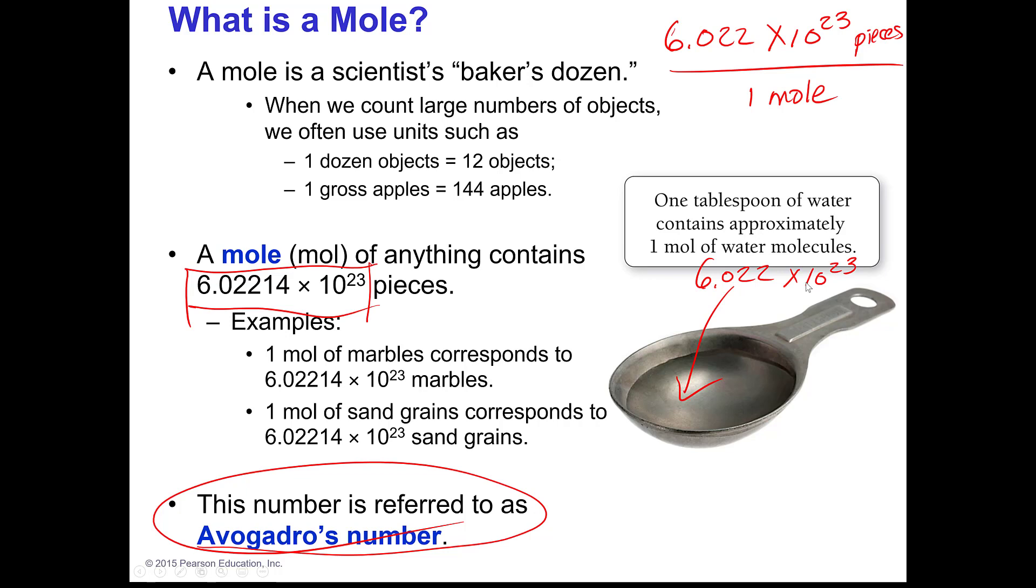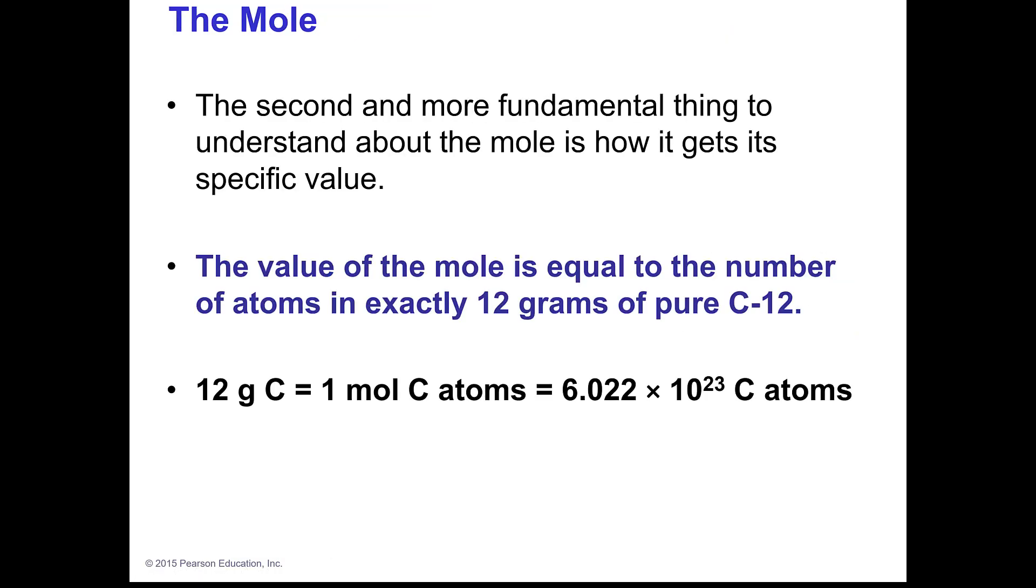What the mole concept does and what Avogadro's number does is it takes us from the teeny tiny world of the AMU and brings us to the real world of grams. Grams are things that we can actually measure in a laboratory. We can't, if you've seen Ant-Man - Ant-Man can go into the atomic level and see the atoms. We can't do that if we're not Ant-Man. So we have to have some calculations, and our buddy Avogadro came up with this. So we can now look at the information on the periodic table and use that in the real world as well as in the atomic world.